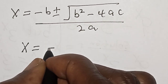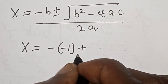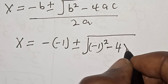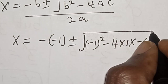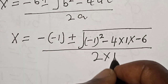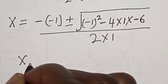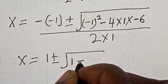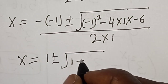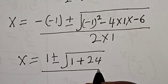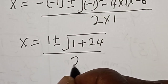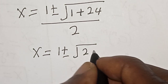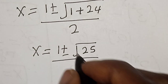Substituting into the formula: y equals minus(minus 1) plus or minus square root of (minus 1) squared minus 4 times 1 times minus 6, divided by 2 times 1. This simplifies to y equals 1 plus or minus square root of 1 plus 24, over 2, which is 1 plus or minus square root of 25, over 2.